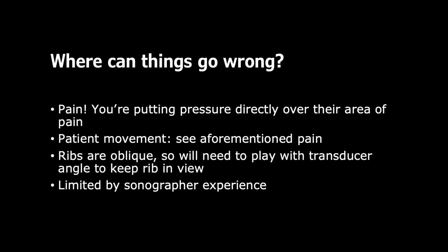Where can things go wrong? Pain — we talked about this earlier. You're putting pressure directly over their area of pain, which can be very limiting. Also, if someone is pressing on a painful spot in your ribs, you're probably going to move, and that patient movement can really affect the quality of your image. Additionally, ribs are oblique, so you'll need to play with the transducer angle to keep the rib in view. And finally, as with most ultrasound exams, they are limited by sonographer experience — the more experience, the better the images and the exam.